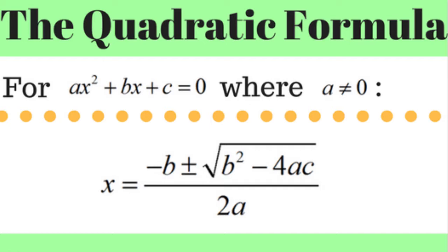For the standard form of a quadratic equation, which is ax² + bx + c = 0, where a must not be equal to zero, the quadratic formula is x equals negative b plus or minus the square root of b² minus 4ac, all over 2a. That is our quadratic formula.